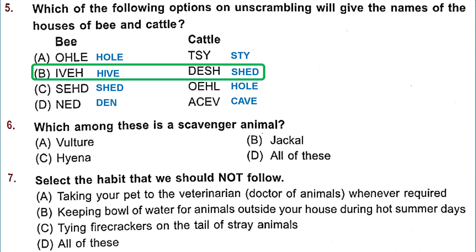Question 6: Which among these is a scavenger animal? Scavengers are those that eat the remains of dead animals. Vulture, jackal, and hyena are all scavengers. So Option D — all of these — is correct.